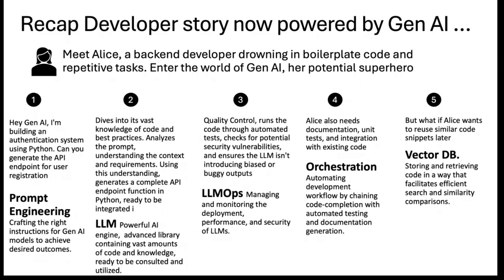Once the prompts are defined, GenAI's task travels through a sea of code, best practices, analysis, prompts and responses. Using the information provided in the prompt, it develops an endpoint function ready for integration — this is called the LLM, your large language model. Think of it as a powerful AI engine with advanced libraries and vast code knowledge, ready to be consulted and utilized. The LLM then goes through quality controls: deployment, performance, security checks — all managed through LLM ops, just as DevOps manages pipelines.